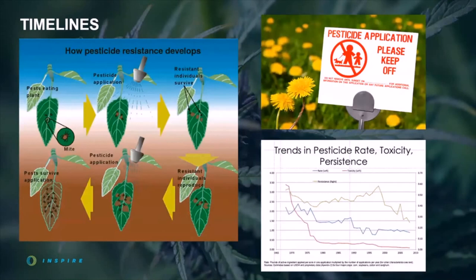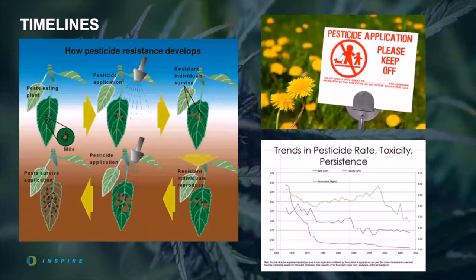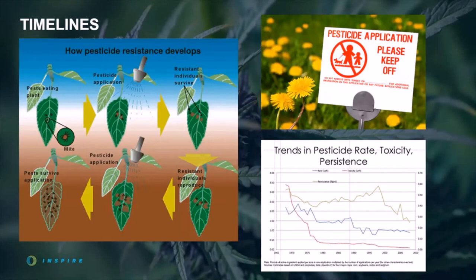Timelines are of utmost importance — for reapplication, for toxicity to the bug, toxicity to the plant. We need to understand the time it takes fungal hyphae to develop to strangle a root-feeding nematode, how long it takes resistance to occur in the bug so we know when to rotate modes of action, how long it takes the plant to build up defenses, how long applications take to be effective, the half-life, how long it works, and the re-entry period for worker safety.